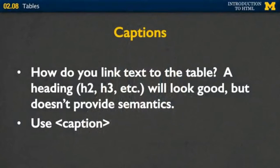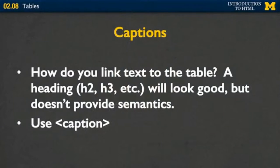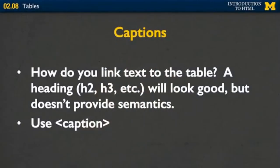Next, let's talk about captions — how do we link text to a specific table? What people used to do is put in some sort of heading, h2 or h3, right above or below the table, so visually you could figure out it went with the table. But I really want to push you to use semantic tags. Instead of doing that, you can use the caption tag inside the table, and it'll help everyone know that this caption goes with this specific table.